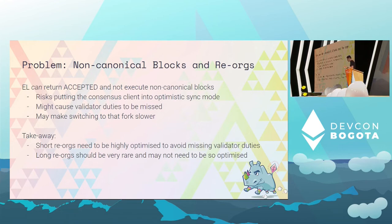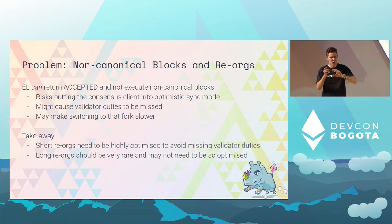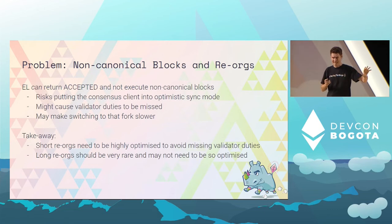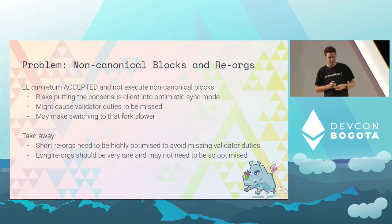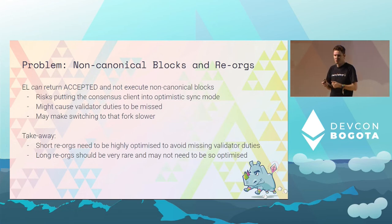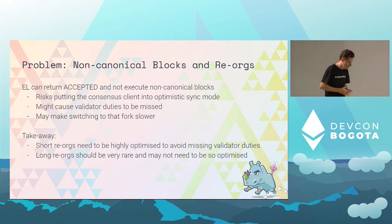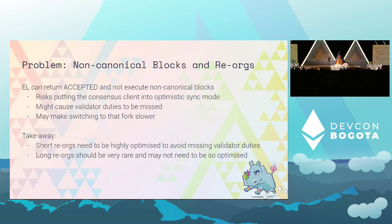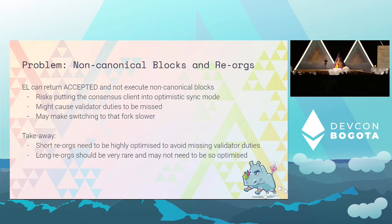The other place where we see an interesting interaction between consensus and execution clients is around non-canonical blocks — blocks that we receive that we don't believe are part of the canonical chain, maybe received really late or whatever. For an execution client, particularly ones that only store one version of the world state rather than the full tree, they're really tempted to just not bother executing the transactions because they don't want to store that world state. The Engine API allows that — allows them to say, this isn't worth executing, I will store it, and if it becomes canonical, I'll execute it, but I'm not doing it now. And they can return 'accepted'.